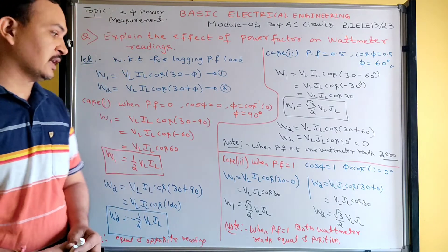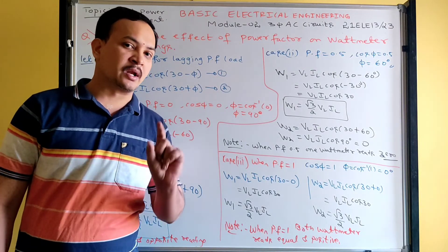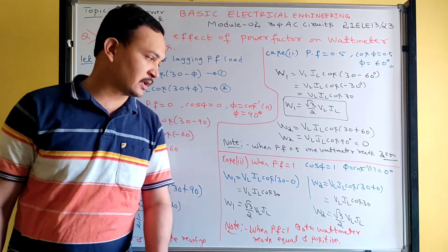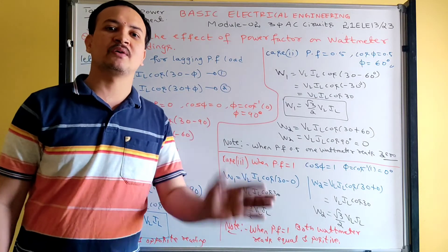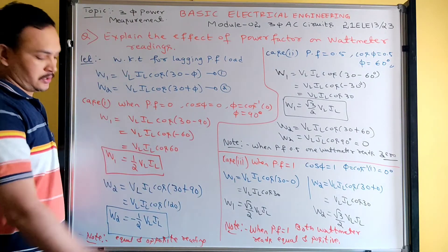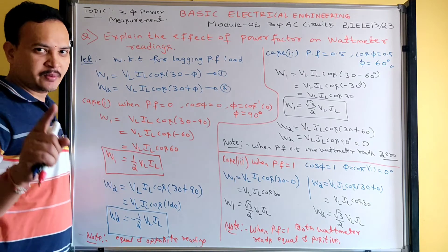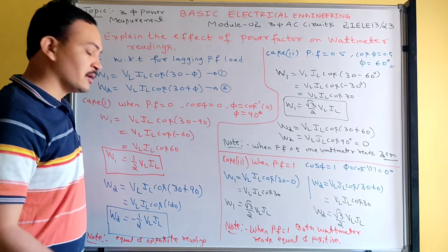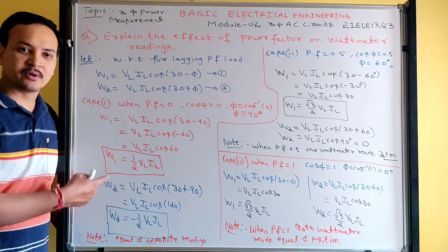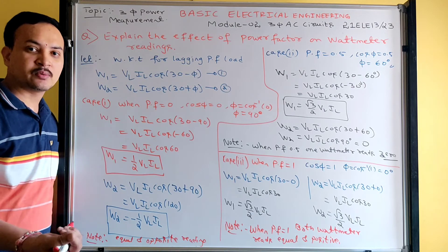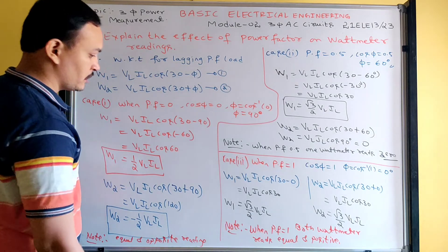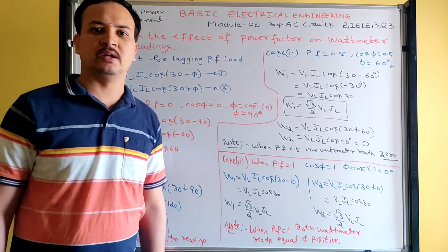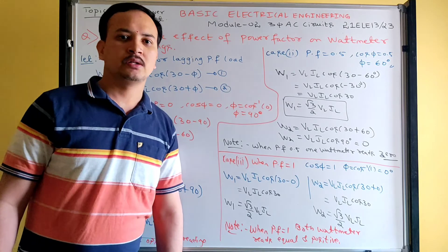If W1 = 5 kW and W2 = −5 kW — equal and opposite readings — the power factor is 0. So to summarize: equal and opposite readings → power factor is 0; equal and positive readings → power factor is 1; one wattmeter reads zero → power factor is 0.5. You can directly tell the power factor without any calculation.